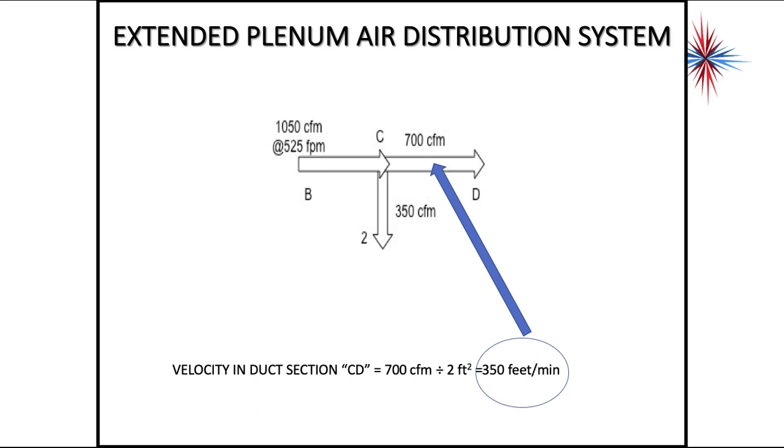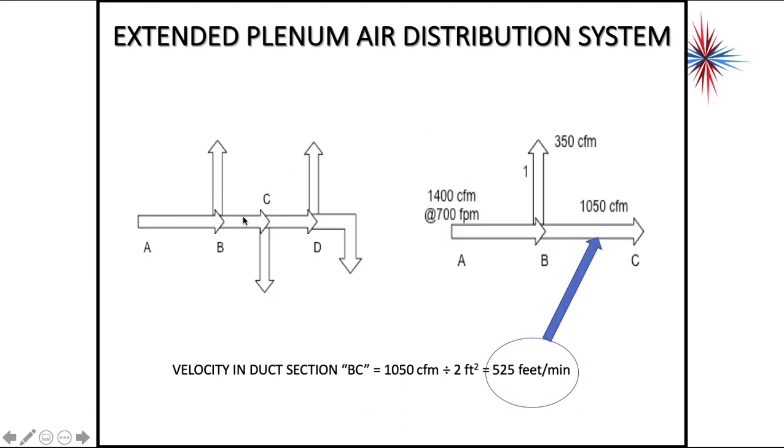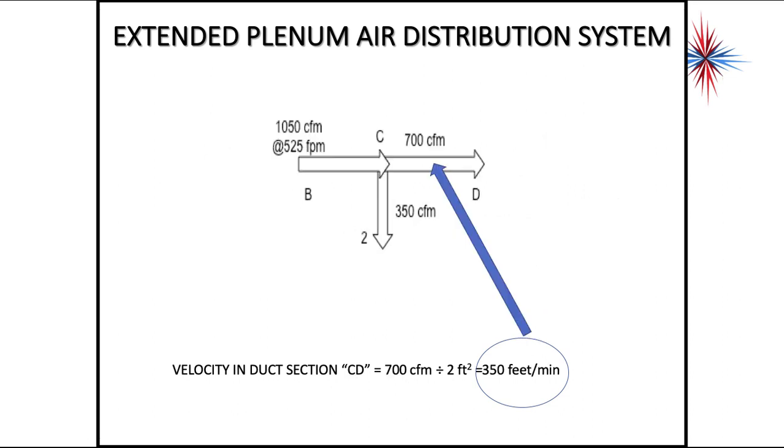So what you're seeing is as the end of the duct is reached, as my branches go, I continue to lose velocity in this system. I may maintain my airflow to what I need, but I'm losing my velocity, losing the speed.